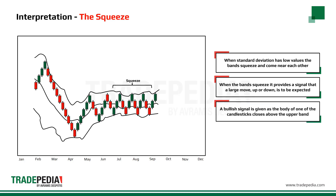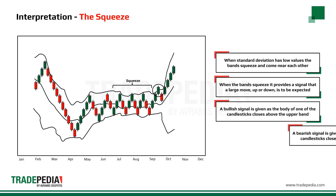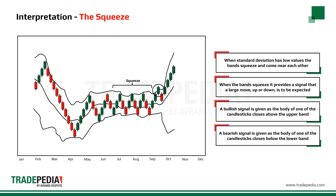A bullish signal is given as soon as the body of one of the candlesticks closes above the upper Bollinger Band. A bearish signal is given as the body of one of the candlesticks closes below the lower Bollinger Band.